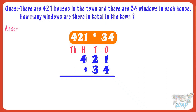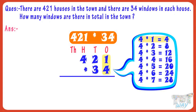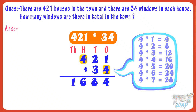First multiply 421 with the ones digit of 34. 4 multiplied by 1 equals 4. Write 4 in the product at ones place. 4 multiplied by 2 equals 8. Write 8 in the product at tens place. 4 multiplied by 4 equals 16. Write 16 in the product.